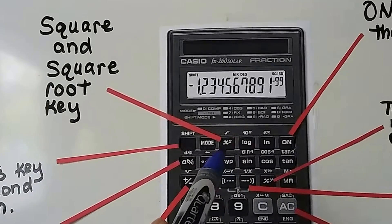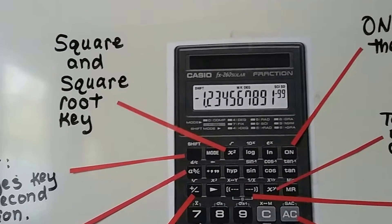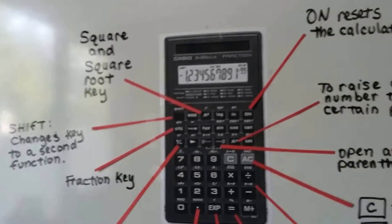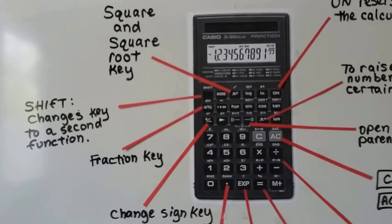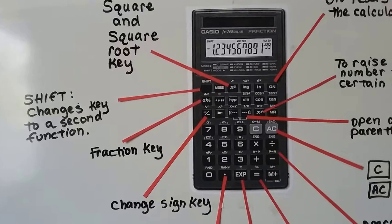Then this one right here, this X with the little 2 exponent. That's the square and square root key. We'll get into squares and square roots later on in this playlist also. So at least you know what the calculator looks like and you'll be a little bit familiar with it.